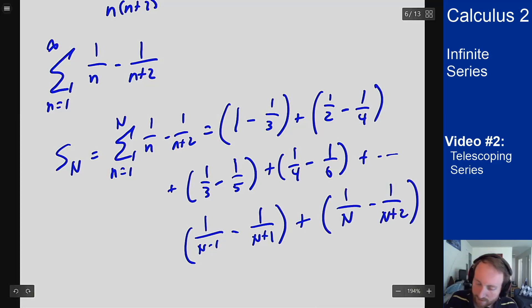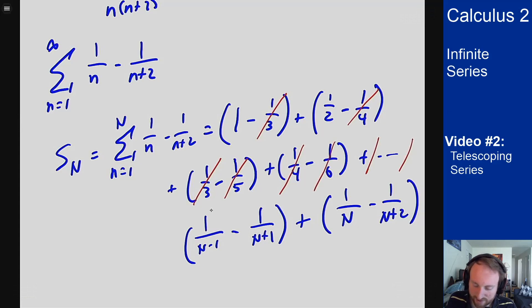Now what's going to happen? This one-third cancels this one-third, minus and a plus. This one-fourth cancels this one-fourth. This one-fifth will cancel the first term over here that's a one-fifth. The one-sixth will cancel one over here. This N minus one will get canceled by a term before it from N minus three because there will be an N plus two there. And this N will also get canceled by the term right before this one.